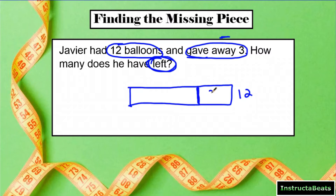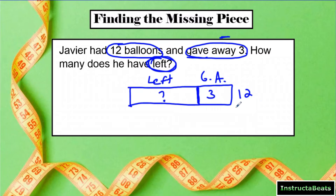He gave away three of those. If my whole thing is 12, I know three is probably a little bit smaller than 12, so this is what he gave away, and then this is how much he would have left — because if you added up what he had left with how much he gave away, it should equal 12. So what my tape diagram is telling me is: something plus 3 equals a total of 12.